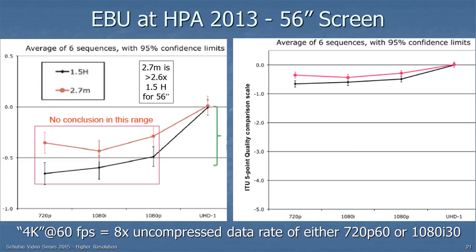This chart was first shown by the European Broadcasting Union at the Hollywood Post Alliance Tech Retreat in 2013. It shows the perceptual improvement in pictures going from HD to 4K at two distances. The black line is 1.5 times the picture height — for a 56-inch screen, about 40 inches away, really close. The red line is at a viewing distance of 2.7 meters, roughly nine feet — a typical home viewing distance. At nine feet, the improvement is maybe a third of a grade; at 40 inches, maybe half a grade.